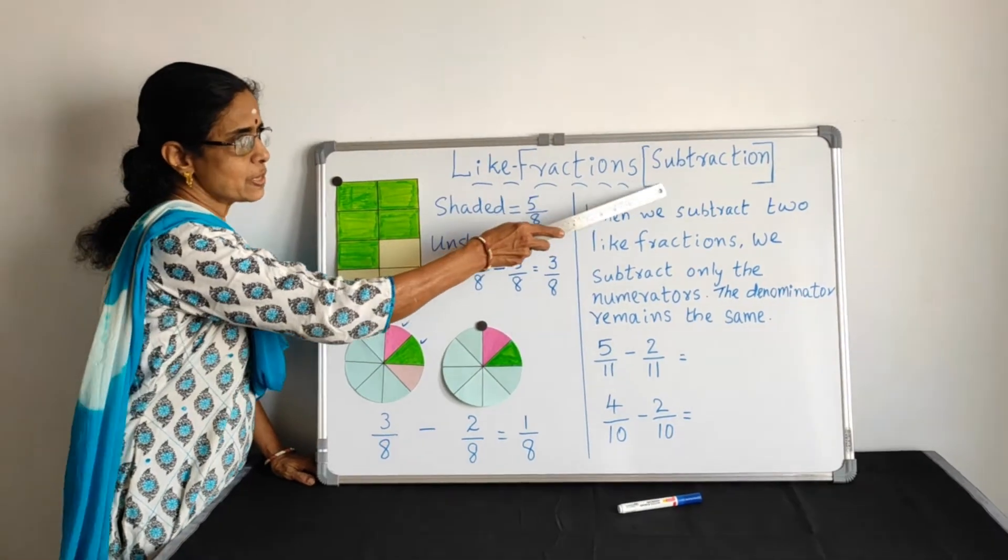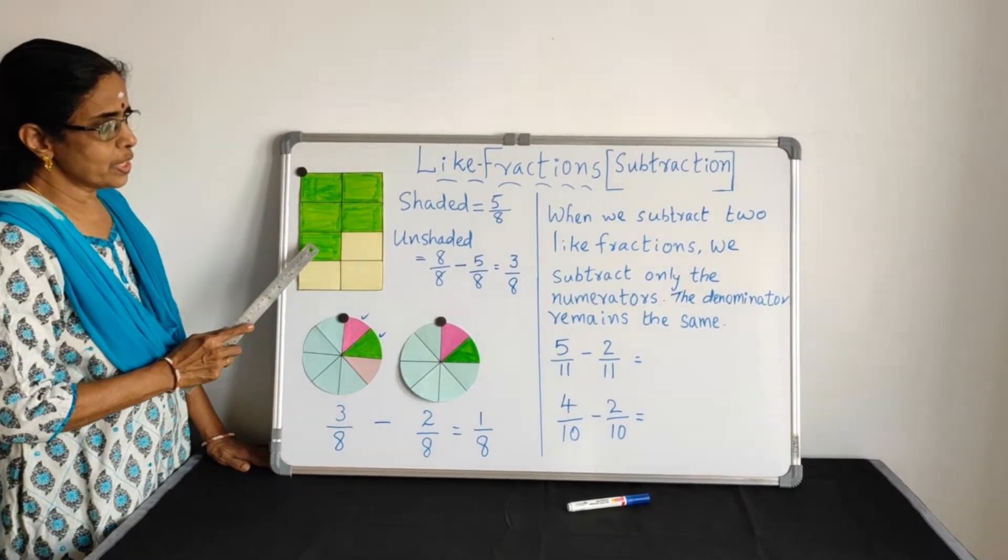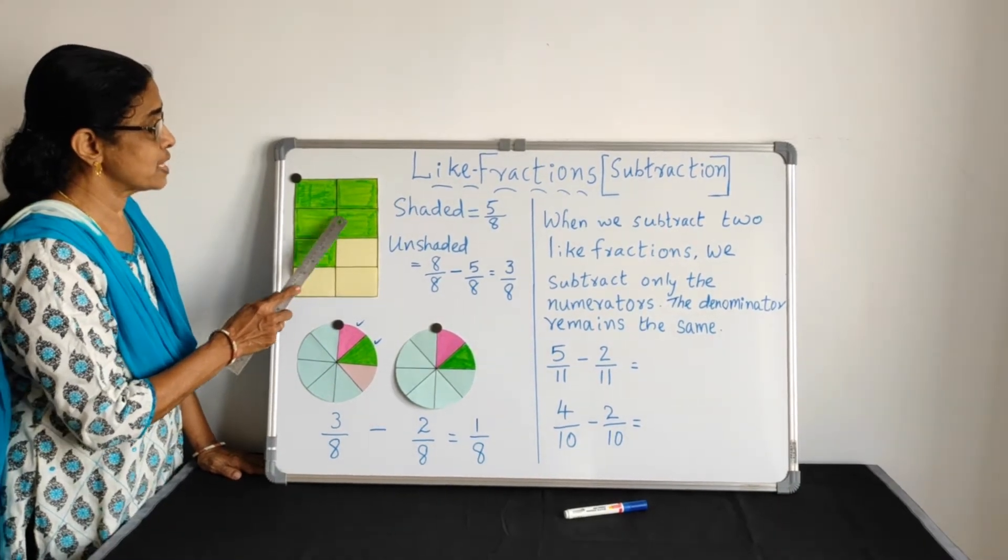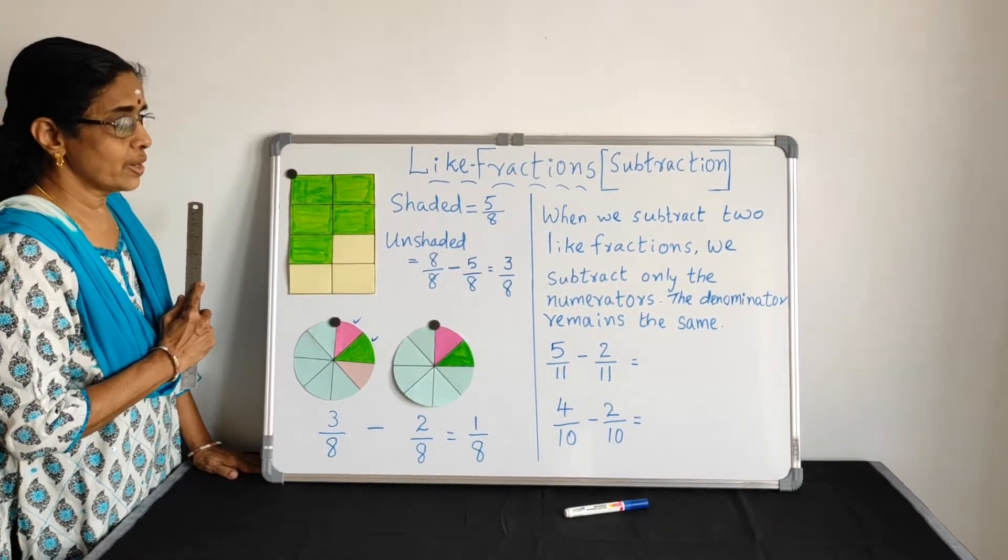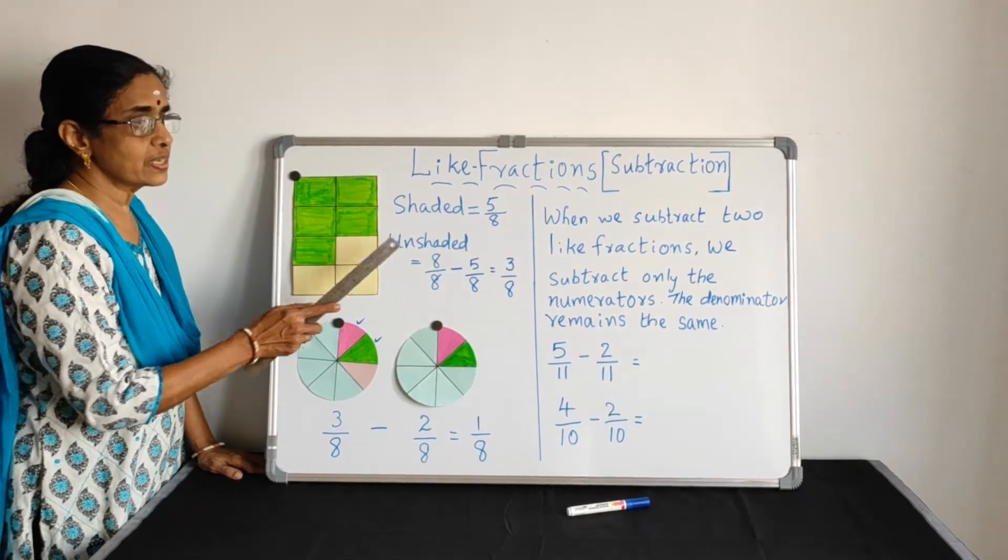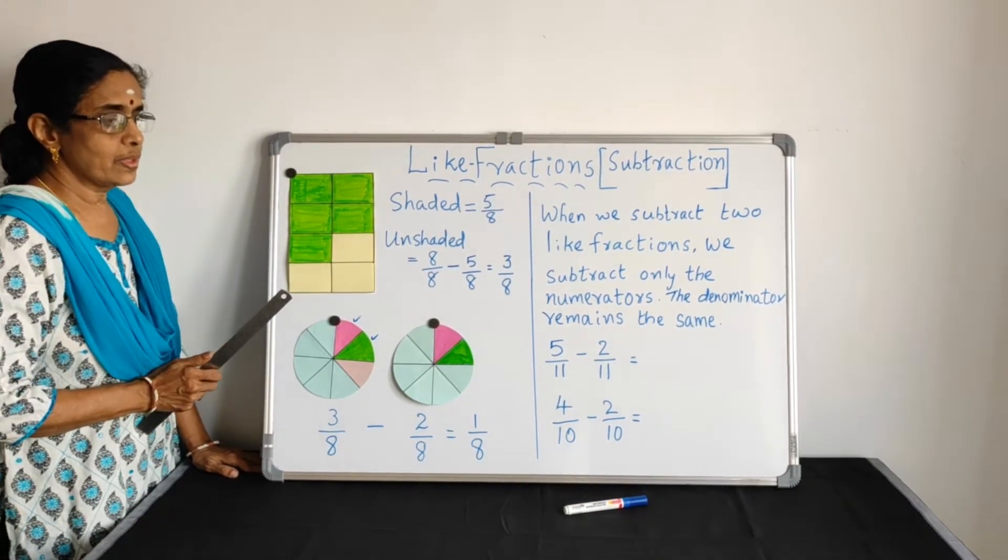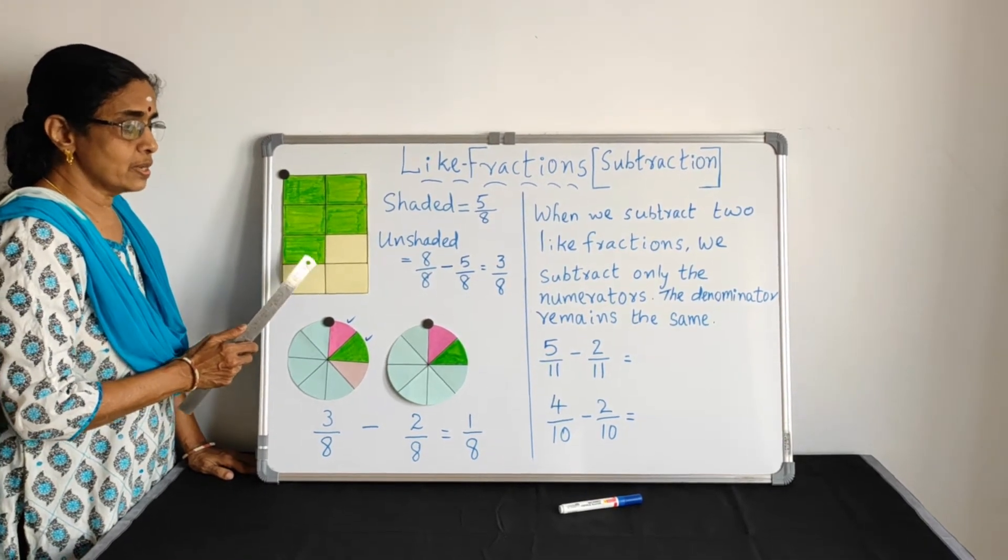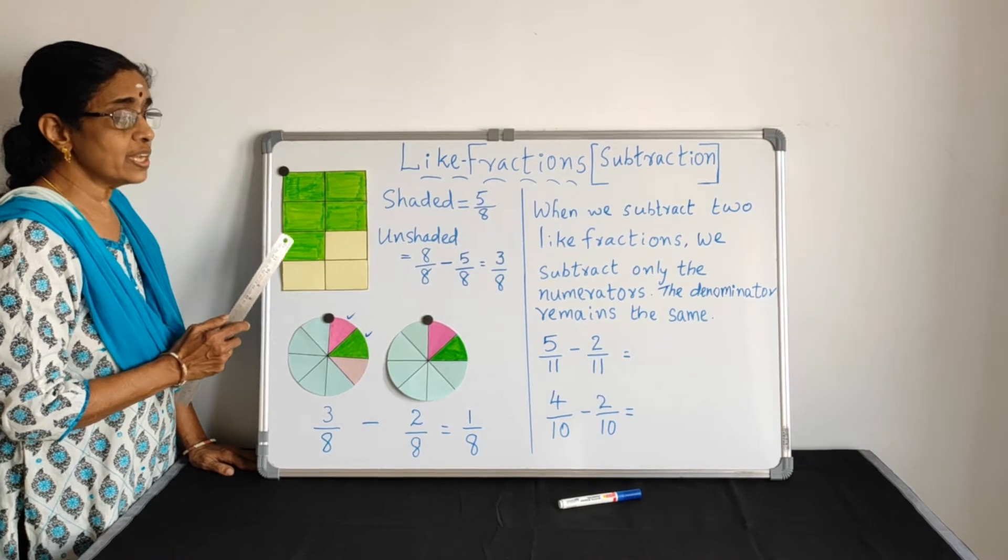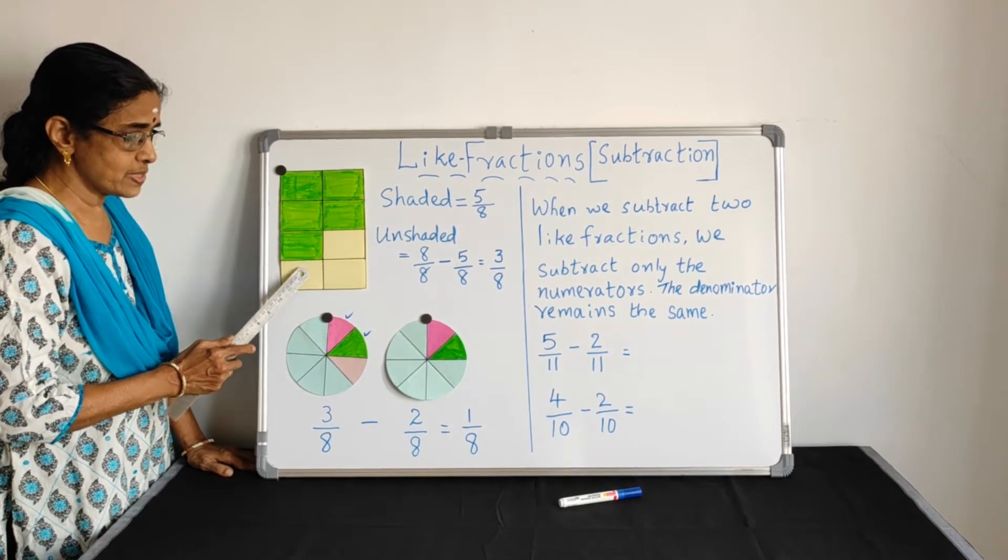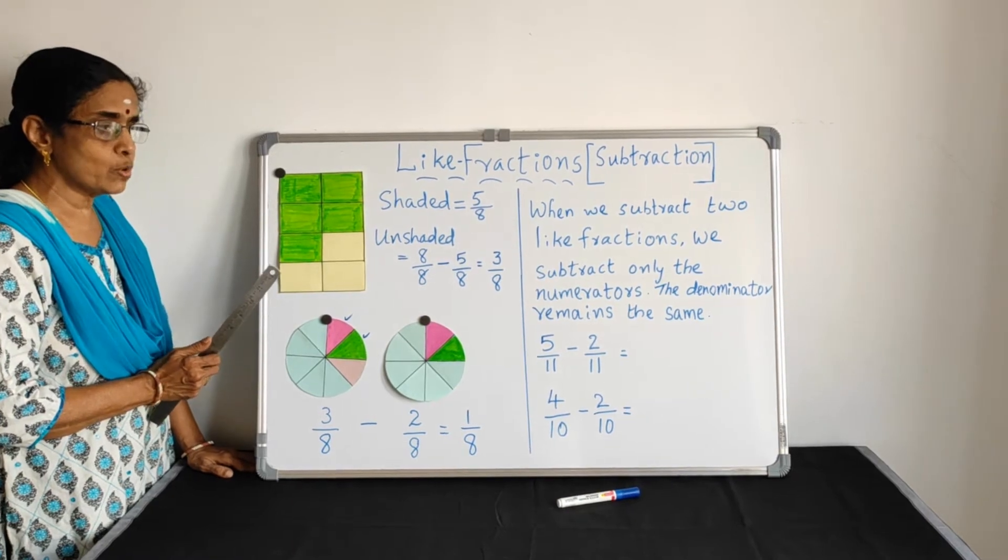Like fractions, subtraction. Look at the picture. Shaded part, 1, 2, 3, 4, 5. 5 out of 8. How many total parts gives the denominator? Unshaded part, we are going to calculate not shaded part. How many? Totally, 1, 2, 3, 4, 5, 6, 7, 8. There are 8 equal parts.